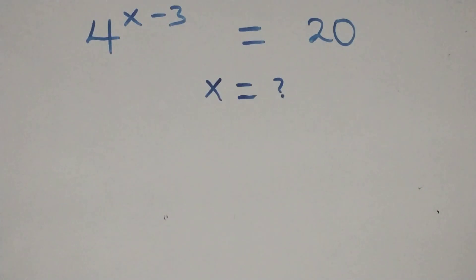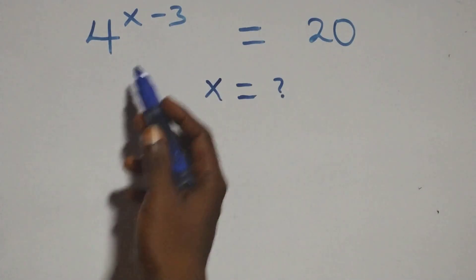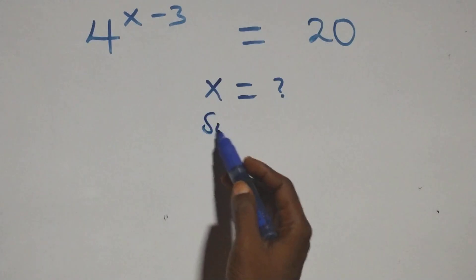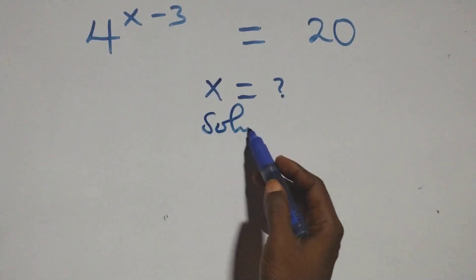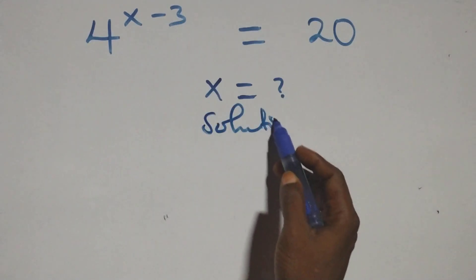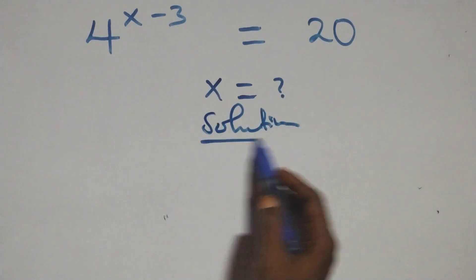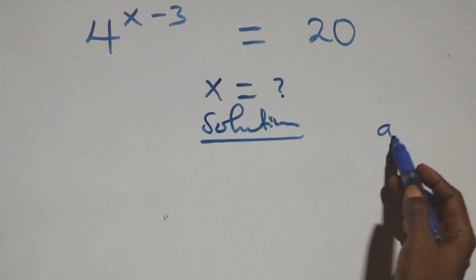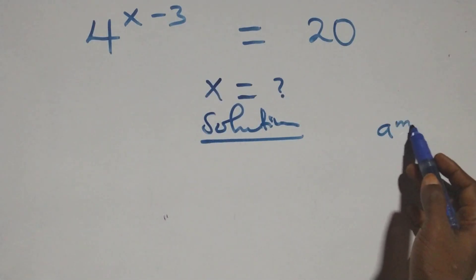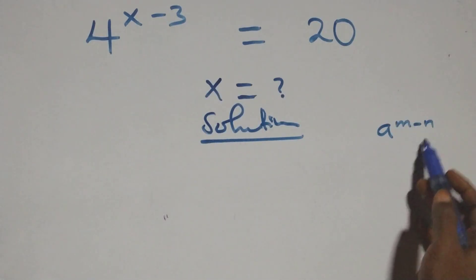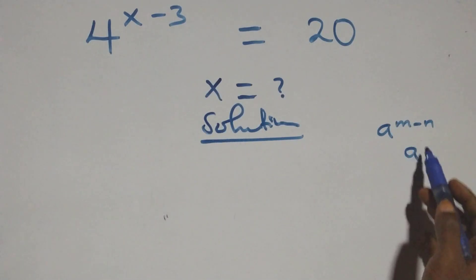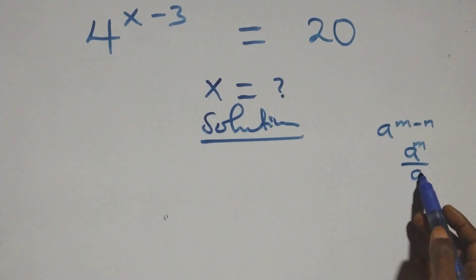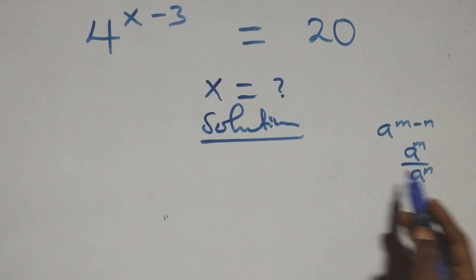Hello, you are welcome. I have to show this nice exponential equation solution from here. What we have here is as follows. We have a raised to power n minus n, which is the same thing as a raised to power n over a raised to power n.